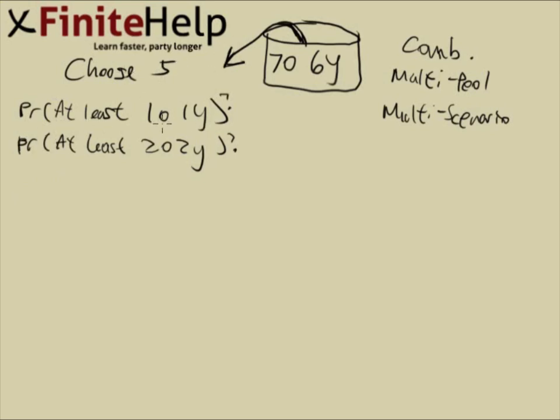So first of all, this is what I call a multi-scenario problem. Multi-scenario because there are multiple different situations or scenarios where the specification of the problem can be fulfilled. Here, the specification is at least one orange and one yellow. So first thing I'm going to do as I've explained in 2.3 lecture,